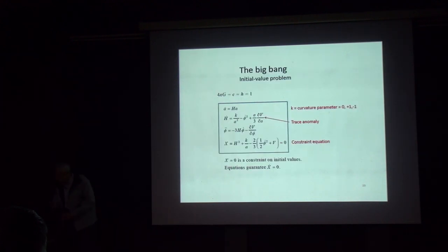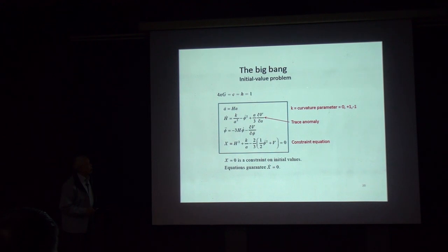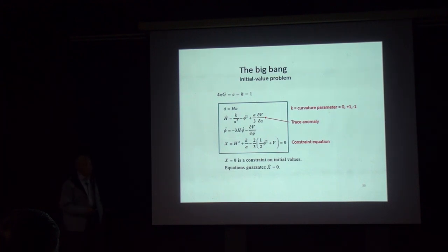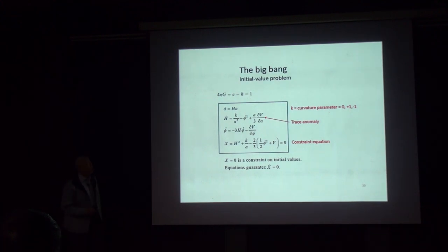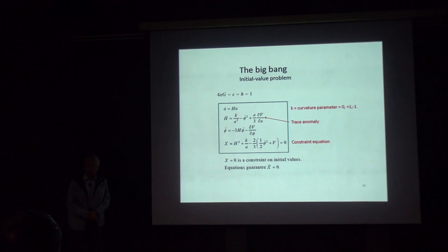We use the Robertson-Walker metric; the gravity scale is A for the expanding universe, and the scalar field has a scale Lambda. Since there is only one scale, Lambda must equal 1 over A times H-bar, making this quantum mechanical. This is an initial value problem: two equations for gravity and one for the scalar field, constrained by the Friedmann equation. To satisfy the constraint — making x-dot equal zero — we must add a trace anomaly term from quantum field theory.